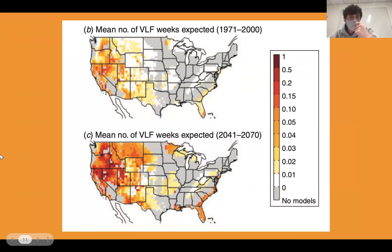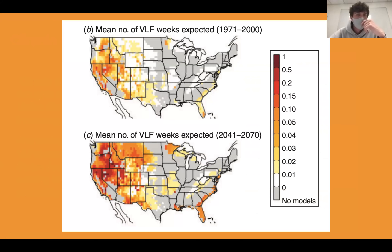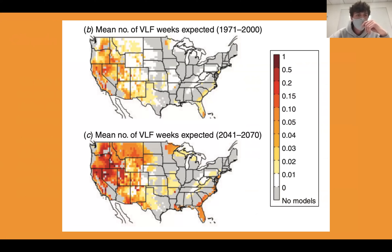On this slide, you can see the same time periods from 1971 to 2000 going to estimated values for 2041 to 2070, showing the very large increase in probability of the P values, especially in the Western part of the United States.